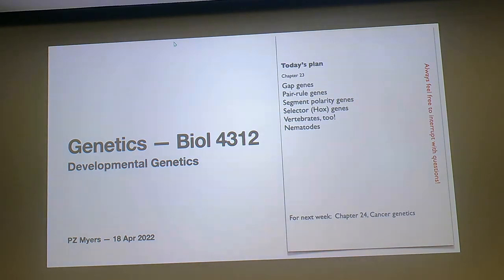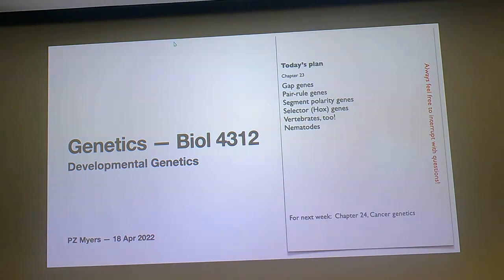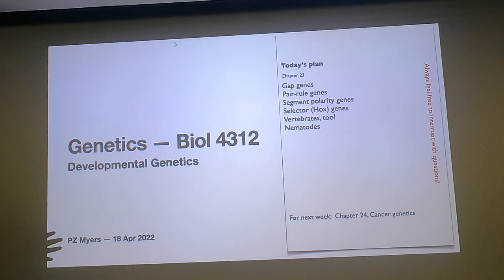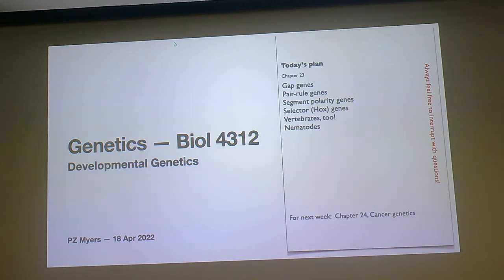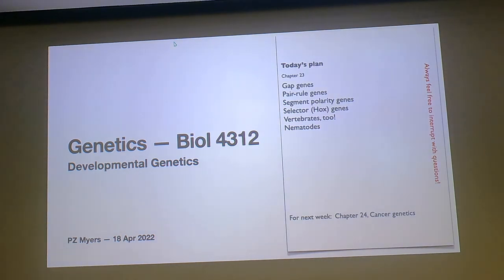We were going through some of those genes. One is bicoid. Recall bicoid is the one that sets up a gradient high at the front, low at the back—it's a maternal effect gene. So that lays out the basic orientation of the embryo. And then there were a set of genes, for instance the gap genes, that read the concentration of bicoid.